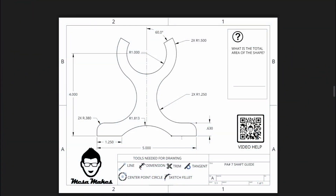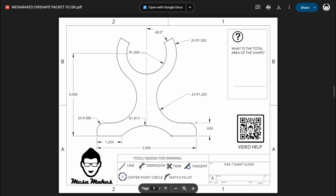Welcome back to our practice assignment series. Today we'll be talking about PA number seven, the shaft guide. Let's take a look at this drawing, break it down, and see what we can do.